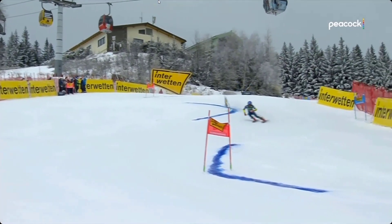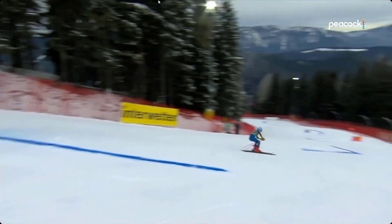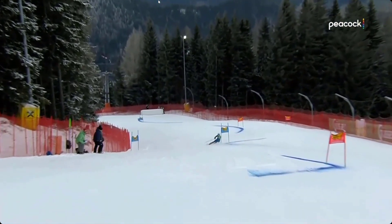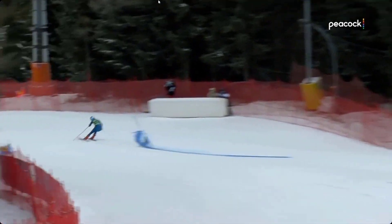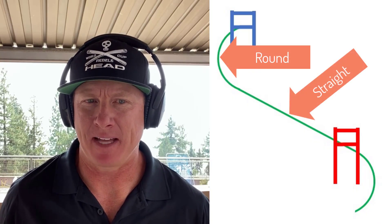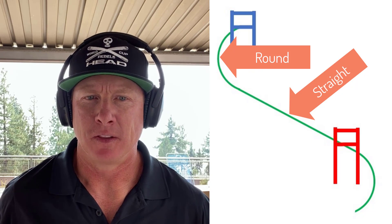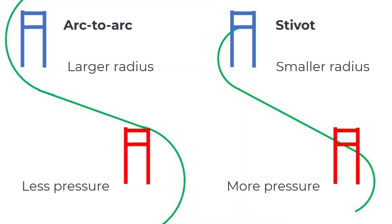The stivit is not to replace the gold standard arc-to-arc carving turn — it could be sold as a tactical option. While linking arc-to-arc turns are round-to-round turns, the stivit is round in the fall line after a very straight path to get there. The resulting radius is smaller, which makes pressure more difficult to harness.